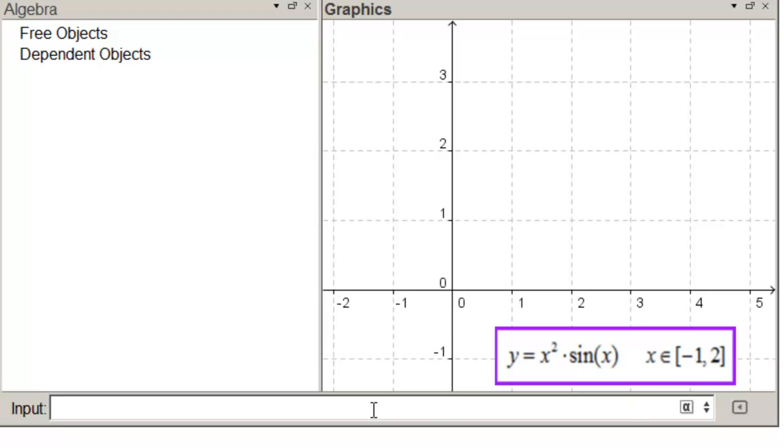so we come down here in the input bar and click, and start typing the function command. And you can see that it gives us what function we want, and a start and end value. So we click on it.